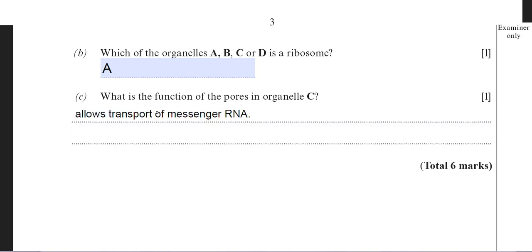I've typed in the answer there to part B and C. With part C, I've just put 'allows transport of messenger RNA'. There is another possible answer for that which I haven't put in because it's only worth one mark. The other one would be to allow transport of the ribosomes out of the nucleus. Just to remind you that there's a structure within the nucleus called the nucleolus, and that's the site at which ribosomes are produced.